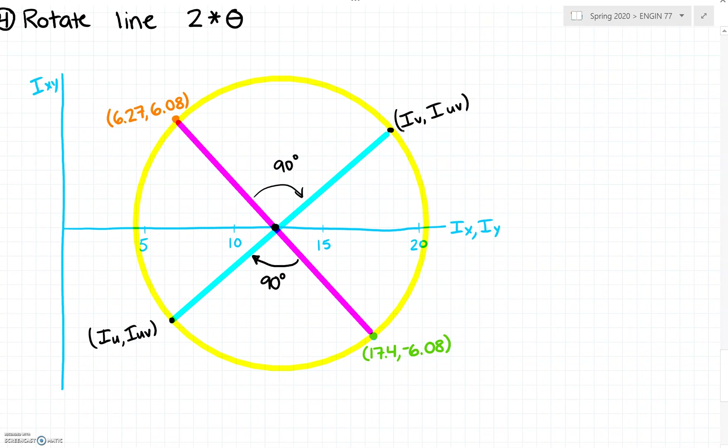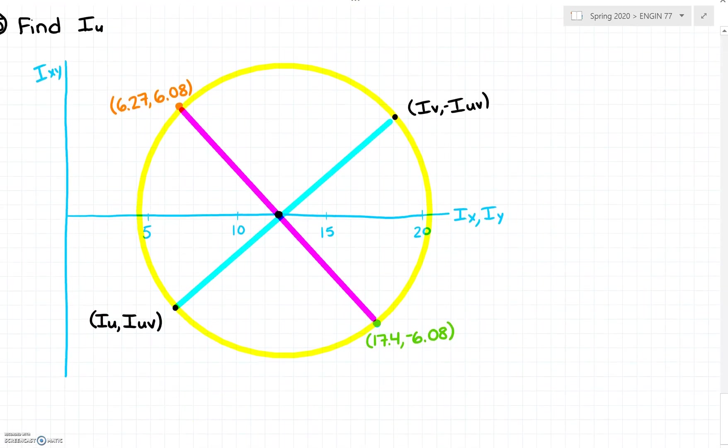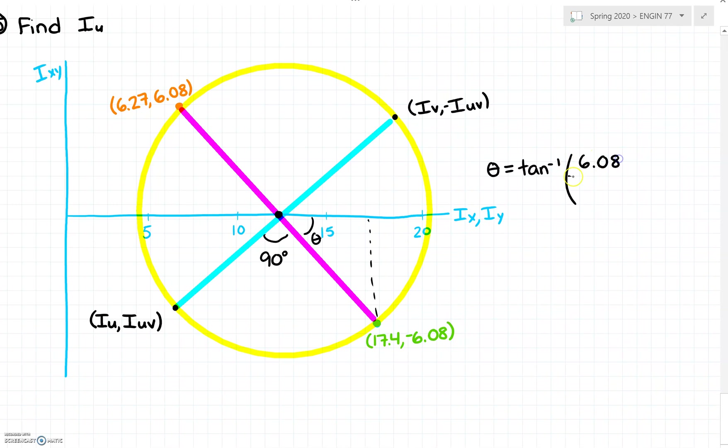Now what we need to do is find what this point is, Iu. To do that we're going to use the points that we already have. We're going to use the fact that this is 90 degrees here. We can also find our angle here, let's call this one theta. Theta is going to be equal to the tan inverse of our opposite, which is 6.08, divided by our adjacent, 17.4 minus the center of that circle which is 11.835. We get theta is equal to 47.53 degrees.